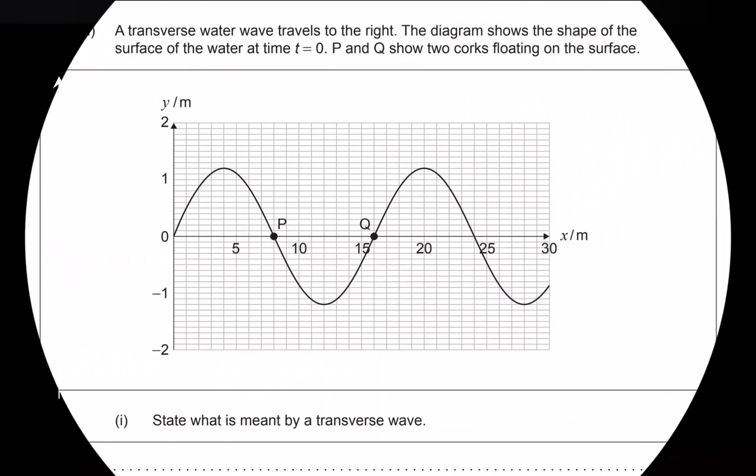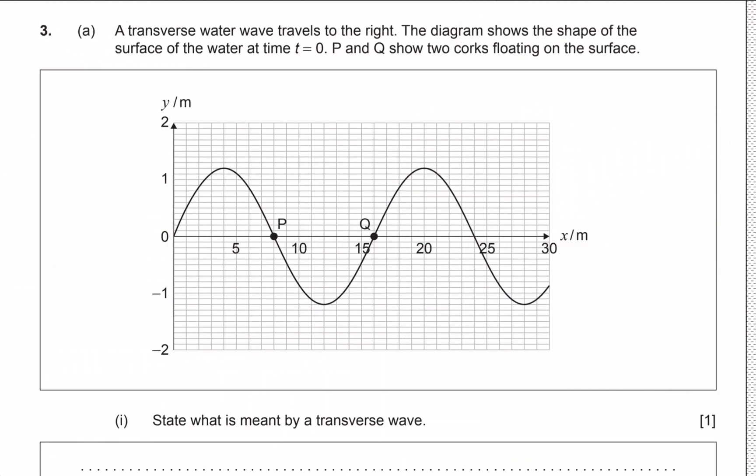Hello guys, welcome to this new video. This is going to be question 3 in the May 2023 time zone 1 paper 2. We are told that a transverse wave is traveling to the right, and the diagram shows the surface of the water at time t equals 0.